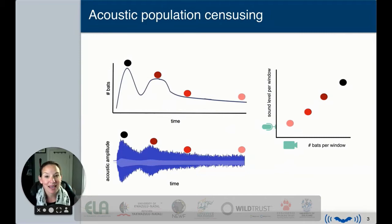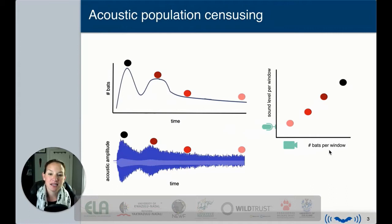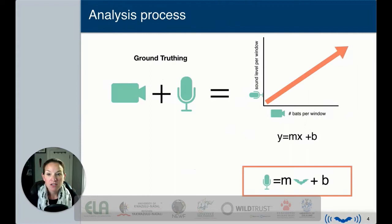Using this observation, if we take a synchronized video and acoustic recording and break it up into windows, then make a plot of the number of bats in a given window versus the sound level in that window, we would predict a really nice scaling that follows some predictable relationship — as the number of bats in a window increases, the sound level increases as well.